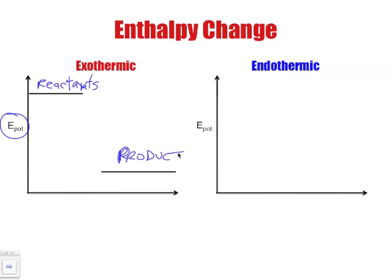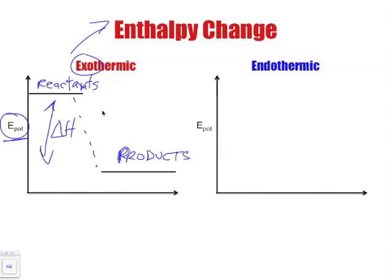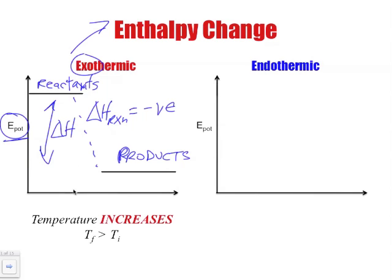So these are the products. What's going to happen in an exothermic reaction is we are going to have this drop in potential energy as heat is being released. Exothermic means heat being released. So we're going to have this delta H drop, and therefore this change in enthalpy for the reaction is going to give us a negative value. Temperature is going to increase in an exothermic reaction.